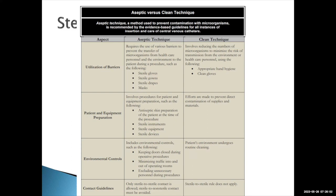With aseptic technique, we have strict environmental controls: we keep the door closed during the procedure, minimize traffic in and out of procedural rooms, and exclude unnecessary individuals. Contact guidelines are very strict — only sterile to sterile contact is permitted. The sterile-to-sterile contact rules do not apply in clean technique. Most IR procedures use aseptic technique, but sometimes clean technique can be used as well.